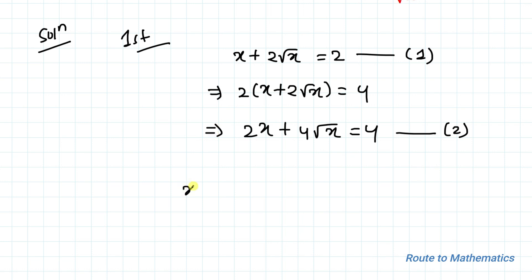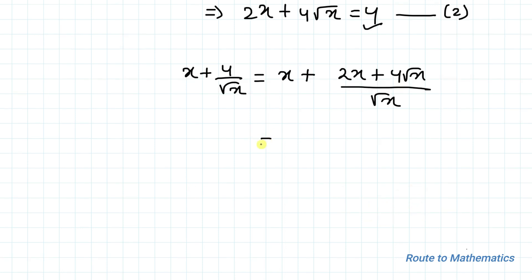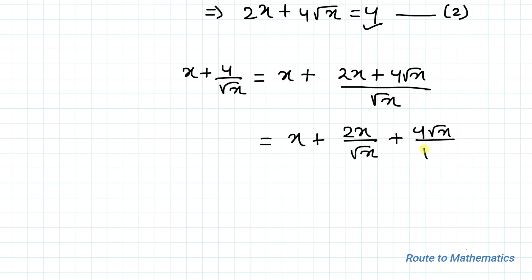What we are asked to find is x plus 4 by root x. From equation 2, we have 4 equals 2x plus 4 root x. Substituting this value of 4, we can write x plus (2x plus 4 root x) all divided by root x. This equals x plus 2x divided by root x plus 4 root x divided by root x.